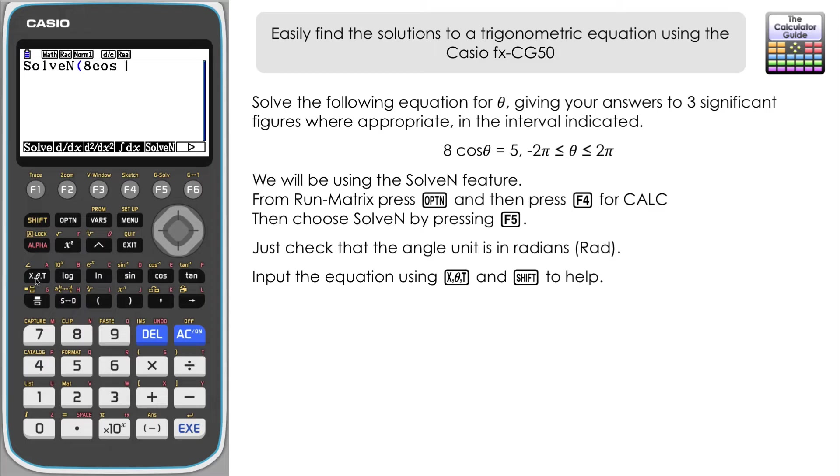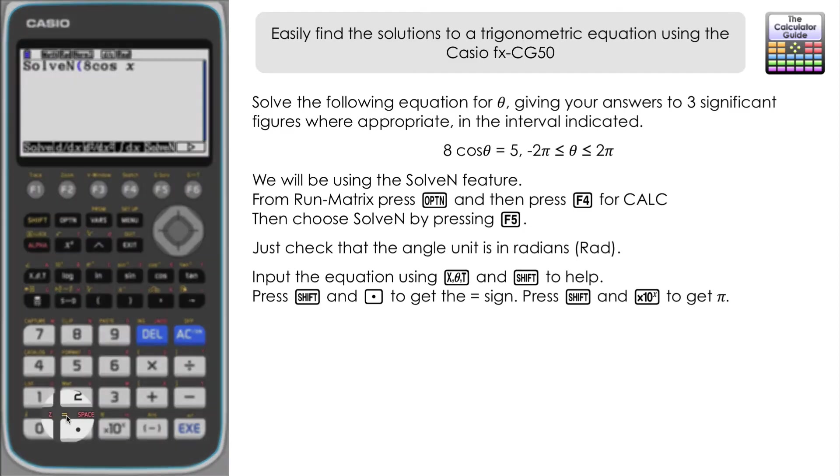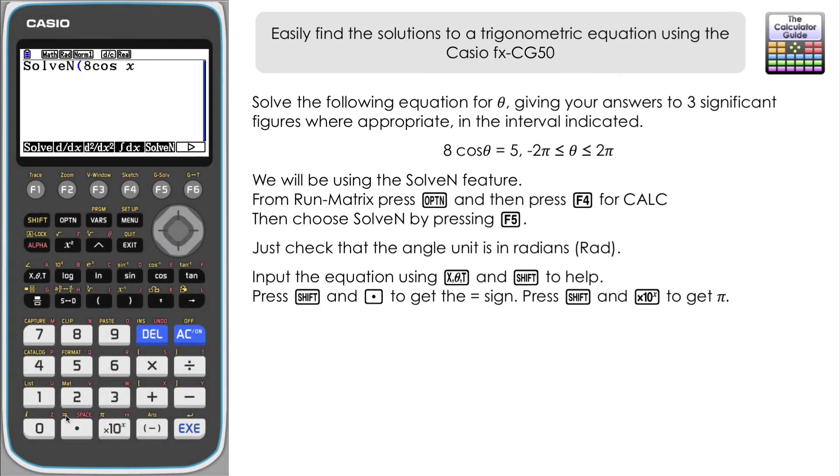Now we want an equals, but don't press execute on this. You can see equals is here as a shift function, as a second function of the decimal point or the dot down here, so it's Shift and then equals will give us an equals there. Then we want 5, so 8 cos x = 5.